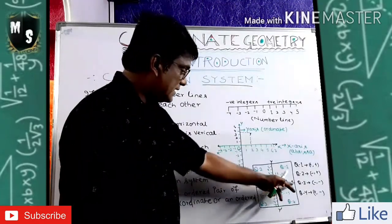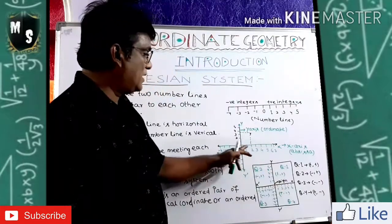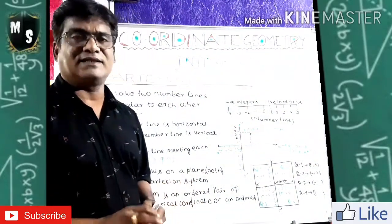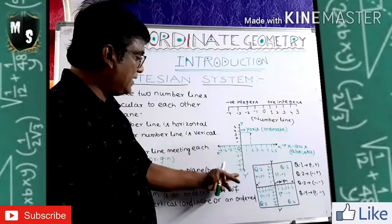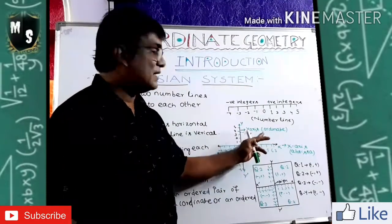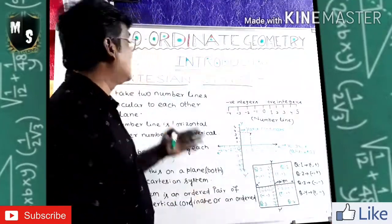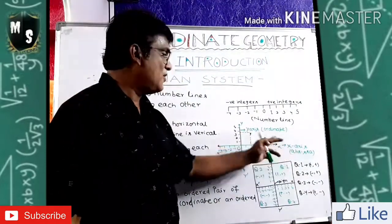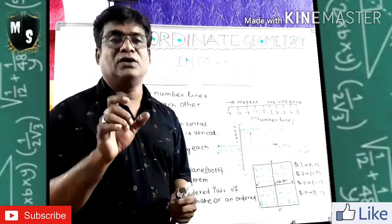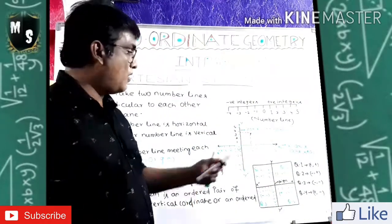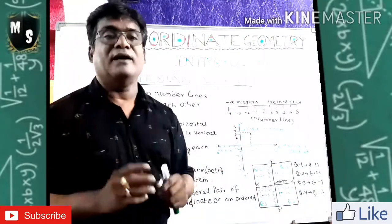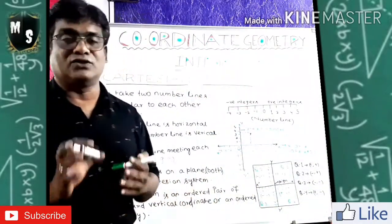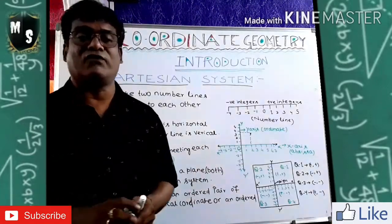The horizontal line is always called the X-axis or abscissa. Similarly, the vertical line is always called the Y-axis or ordinate. A coordinate is a pair of the X-axis and Y-axis — that pair is called a coordinate. So coordinate geometry is the geometry of the X-axis and Y-axis positions of an object.